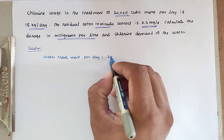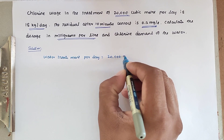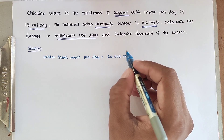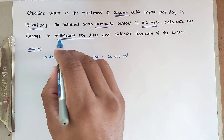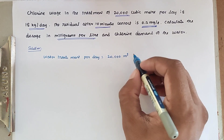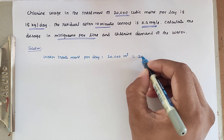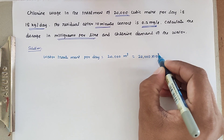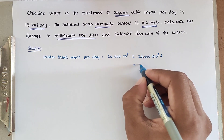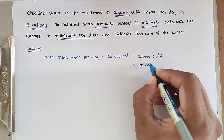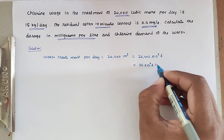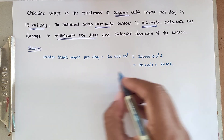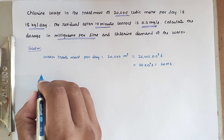Now the volume is 20,000 cubic meters. We have to convert this into liters because they are asking milligram per liter. So 20,000 multiplied by 10 to the power 3 liters gives us 20 into 10 to the power 6 liters, which is equal to 20 million liters.